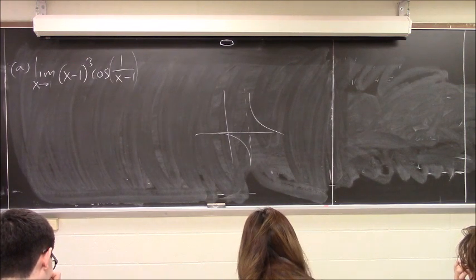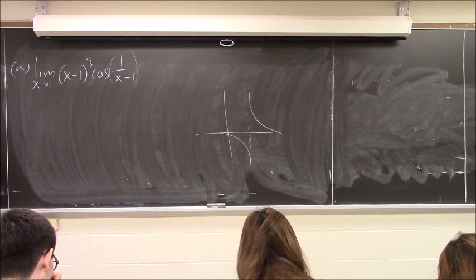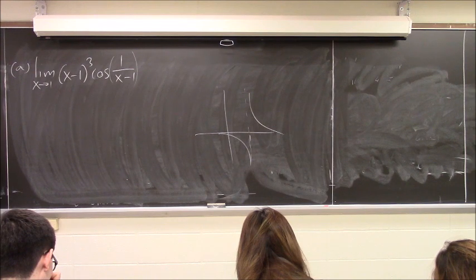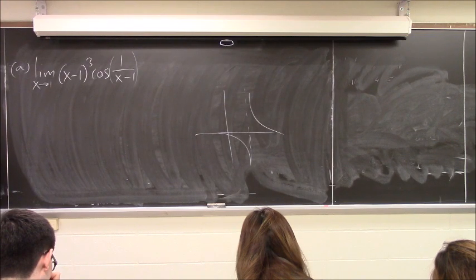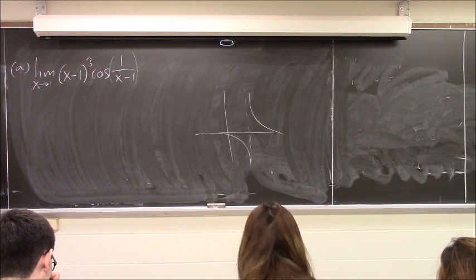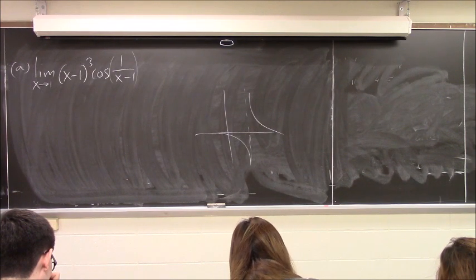Yeah, but you have to argue why that is. You can use a squeeze here — we can find two functions, one on each side, and they both go to 0, so this one also goes to 0. What are the functions? Well, you can't really use squeeze to show something does not exist. So we know we need a boundary — what do you think the bound would be?